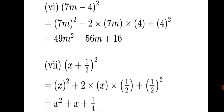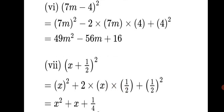Question 7: x plus 1/2, the whole square. Using (a+b)² formula: x² + 2×x×(1/2) + (1/2)². Opening brackets: the 2s cancel in the middle term, leaving x; and 1²/2² = 1/4. The answer is x² + x + 1/4.